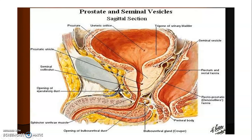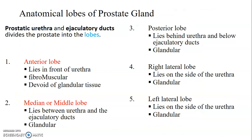Inferior to the prostate is the urogenital diaphragm and superior to the prostate is the urinary bladder. Lateral to it is the levator ani, which cannot be shown in this pelvic hemisection. The prostate is divided into lobes by the prostatic urethra and ejaculatory ducts. It has five lobes. All five lobes are glandular except the anterior lobe, which is mainly fibromuscular. The anterior lobe is in front of the urethra while the posterior lobe is posterior to the urethra. The median lobe is between the urethra and the ejaculatory ducts while the posterior lobe is behind the urethra and below the ejaculatory ducts.